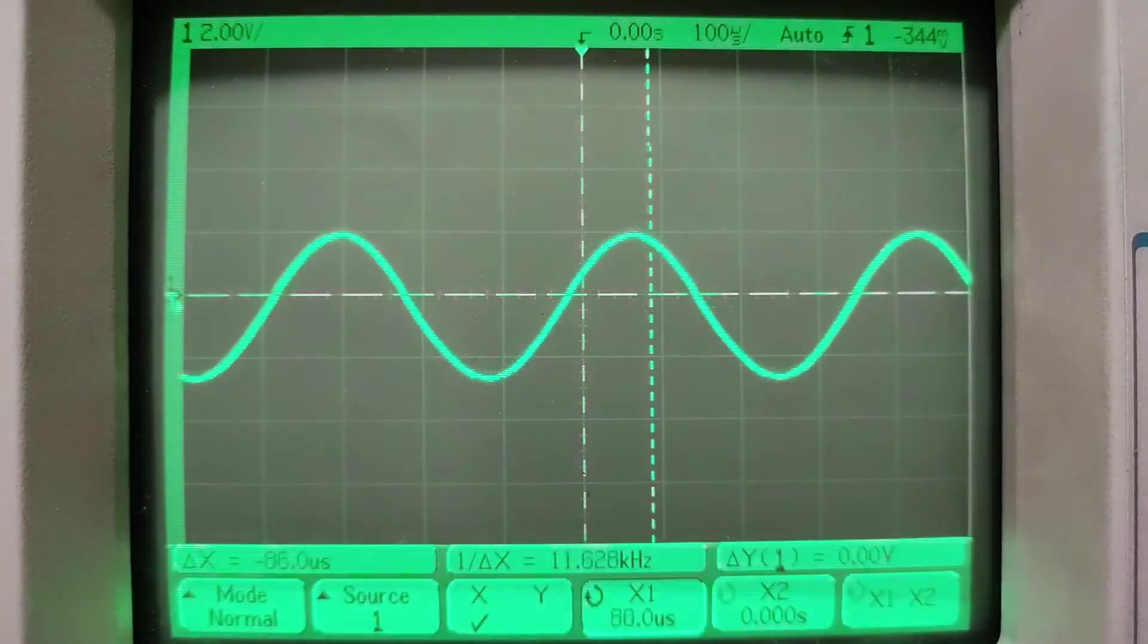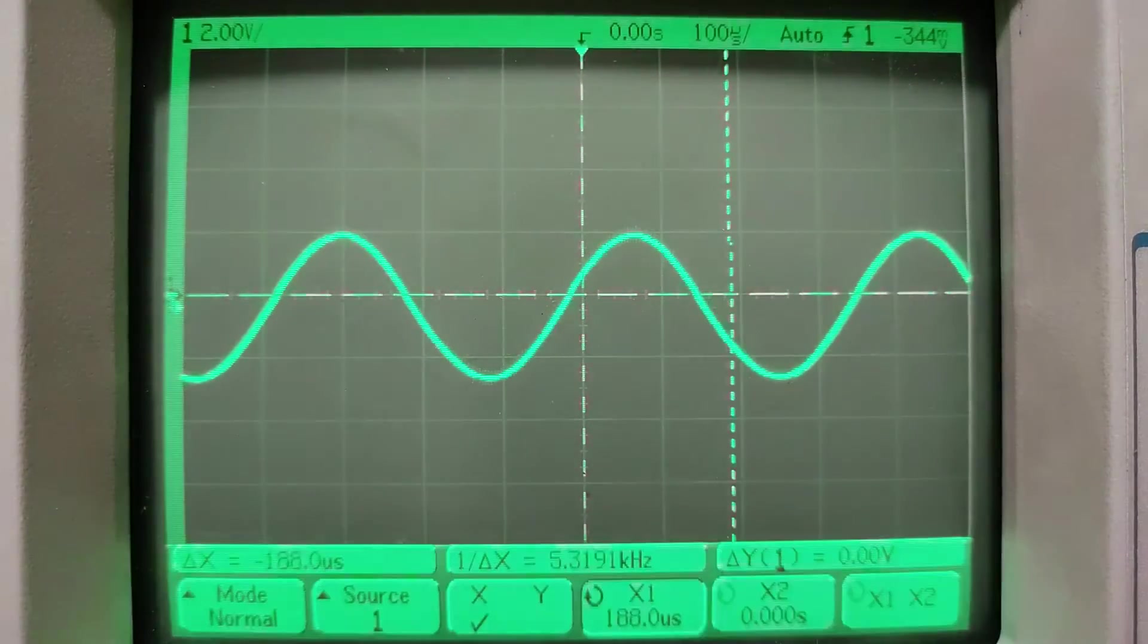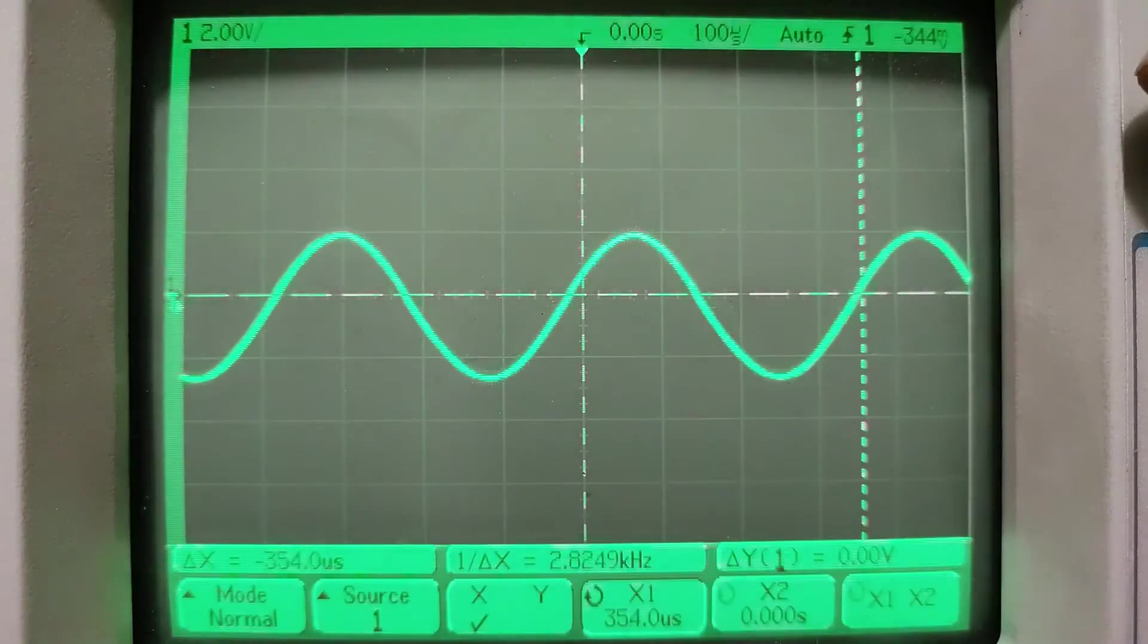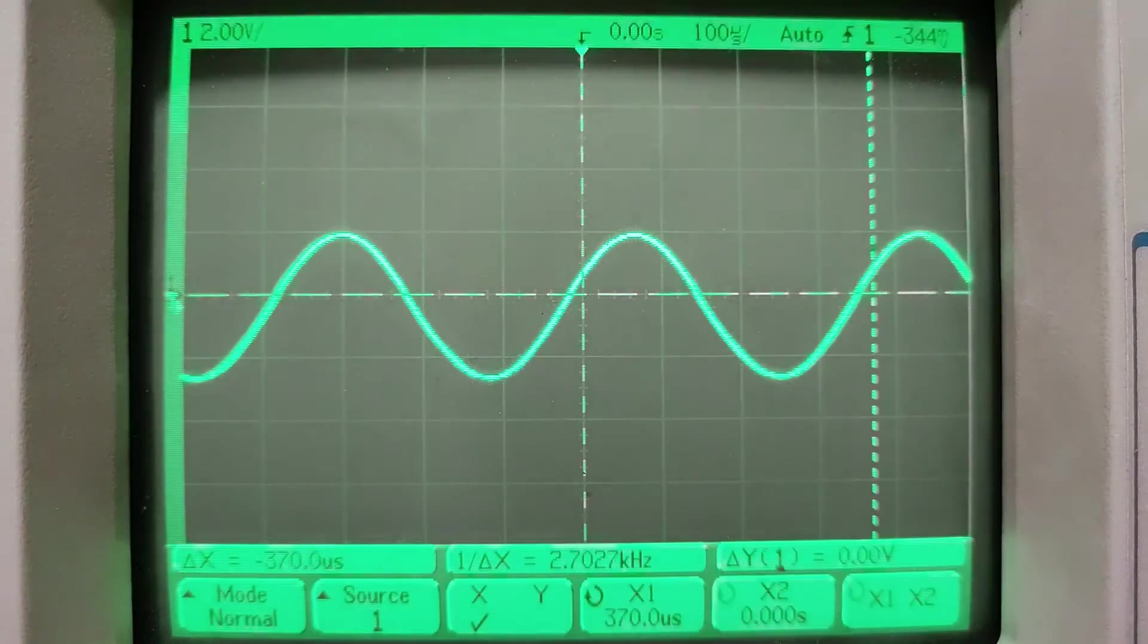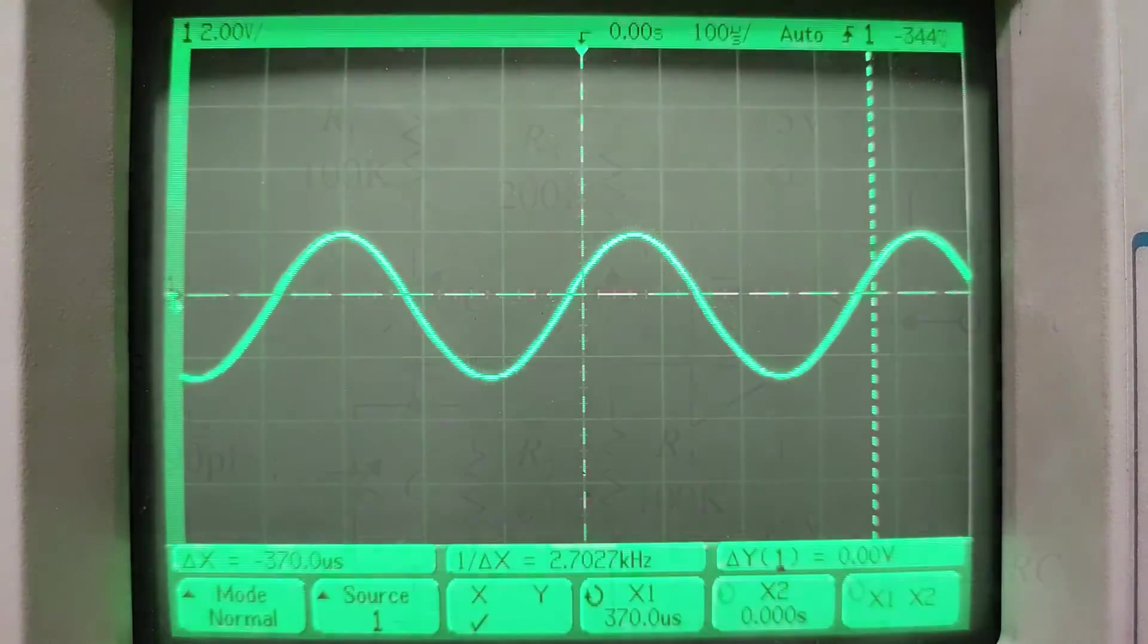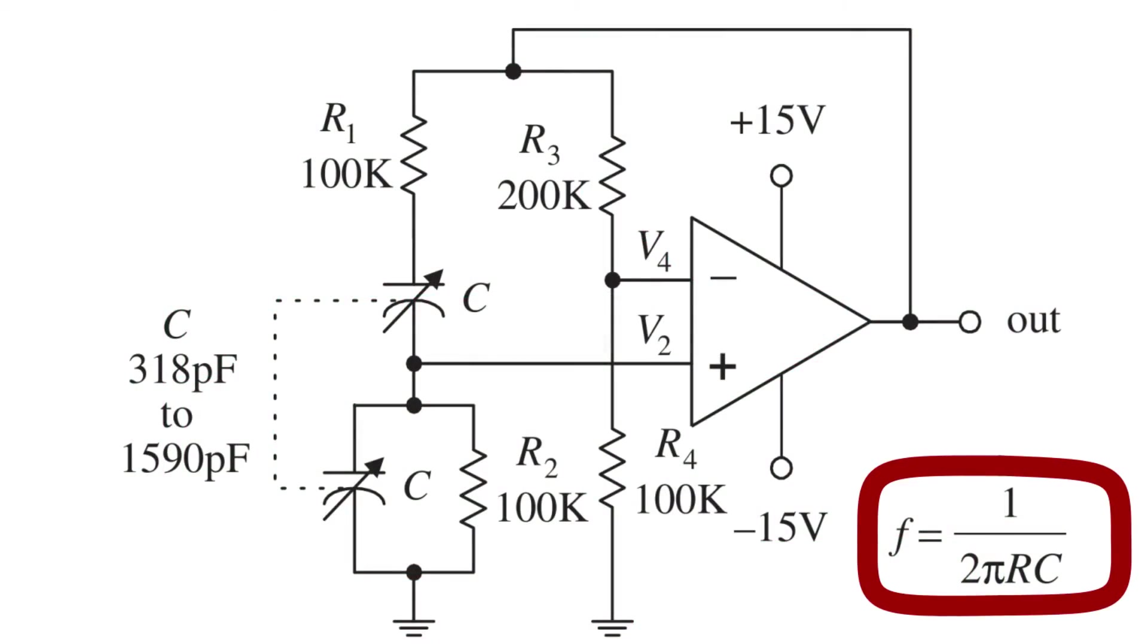With the component values that I chose, the frequency is going to be around two and a half kilohertz or something like that. The formula to calculate the frequency is very simple: it's 1 over 2πRC. With this circuit you can't achieve too high of frequencies. 10 kilohertz is probably the maximum for basic op amps on a breadboard.